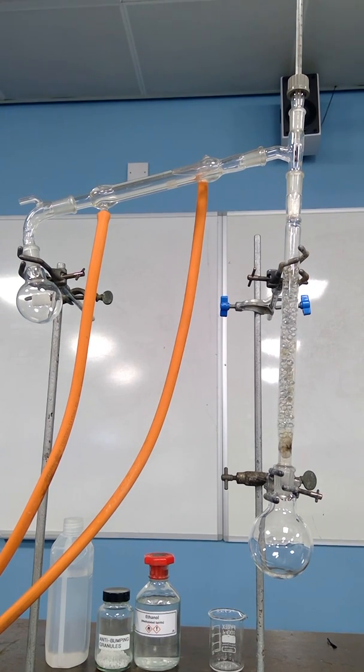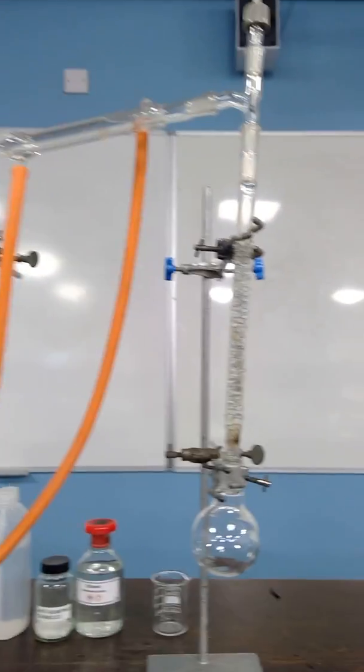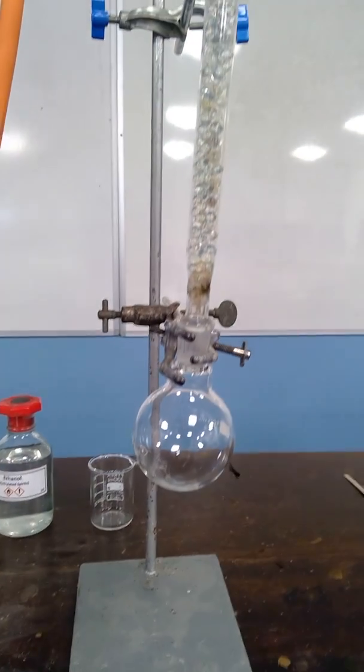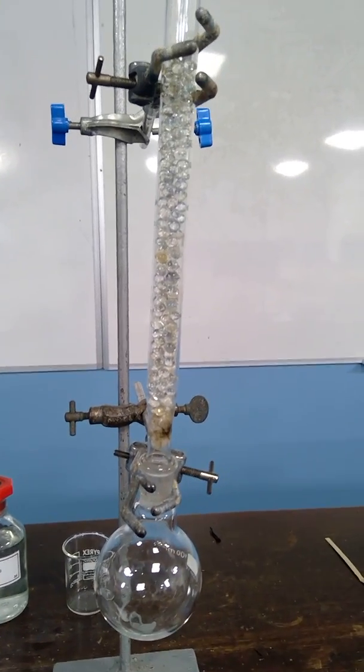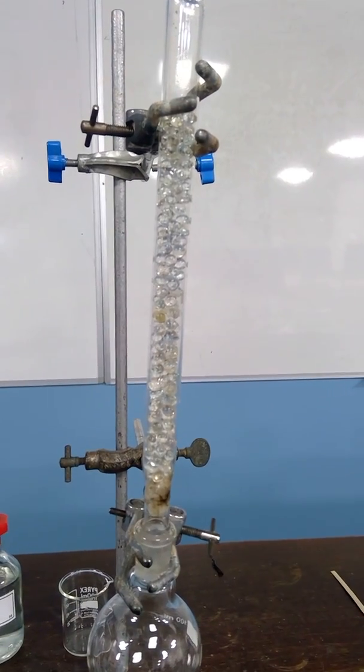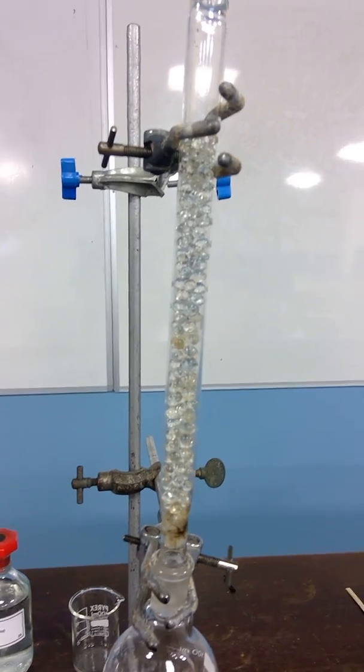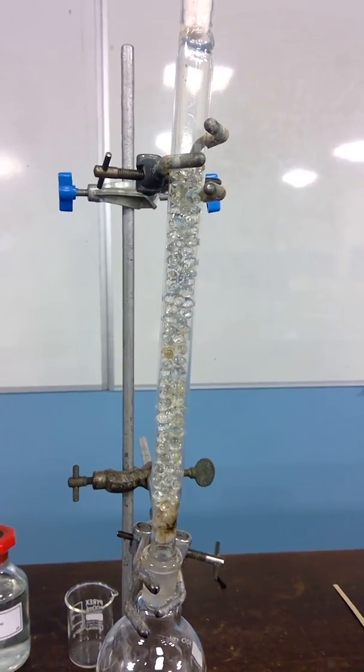The fractional distillation apparatus used in a laboratory uses a round bottom flask. Attached to it is a fractionating column. This is simply a column which has a large surface area and allows for boiling and condensing to occur. In this case the fractionating column is made simply by putting lots of glass beads inside the tube.